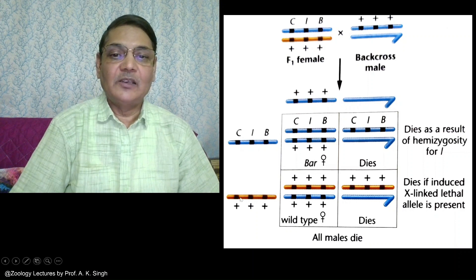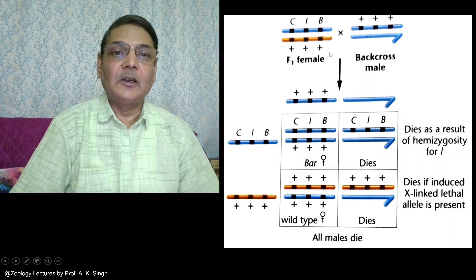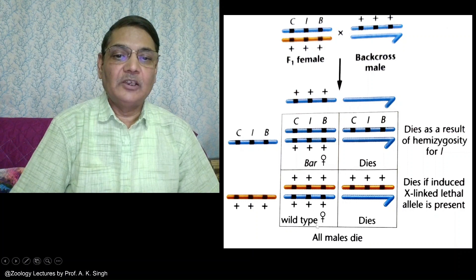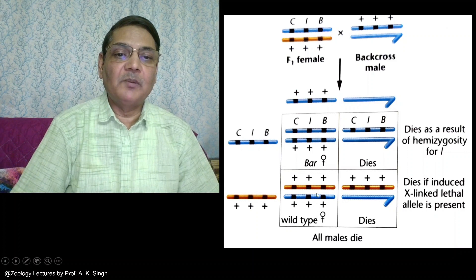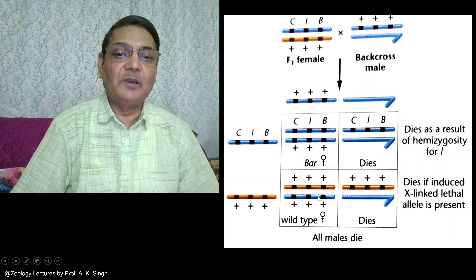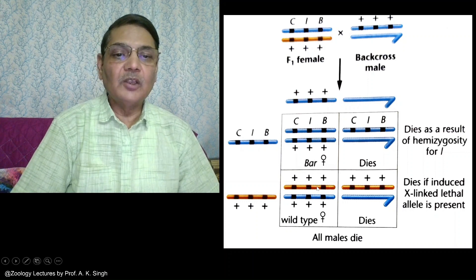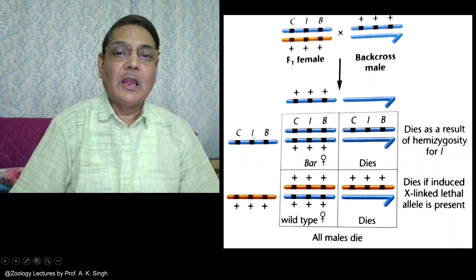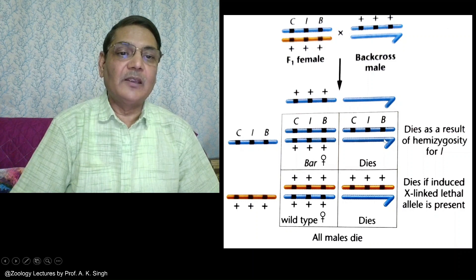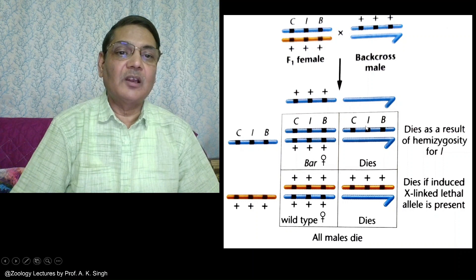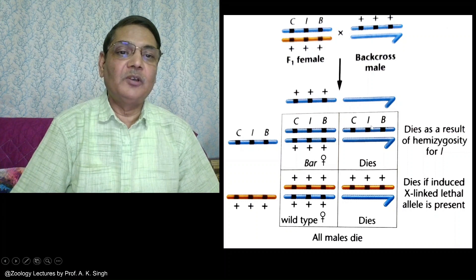It is possible because gametogenesis will occur in the female where 50% will have CLB X chromosome and 50% will have that X chromosome which came from the male exposed to X-ray. Males will form two types of spermatozoa: one with normal X chromosome and other with Y chromosome. There will be random fertilization resulting in CLB bar-eyed females and wild type females. But the male with CLB X chromosome along with Y chromosome will die because the lethal allele is there on the X chromosome and Y chromosome does not possess its homologous normal allele.